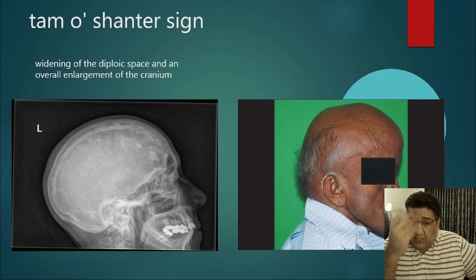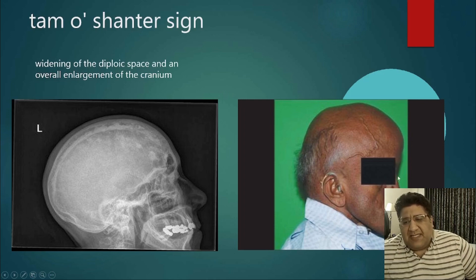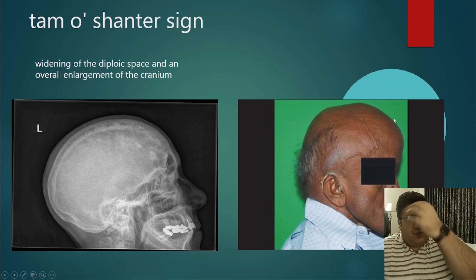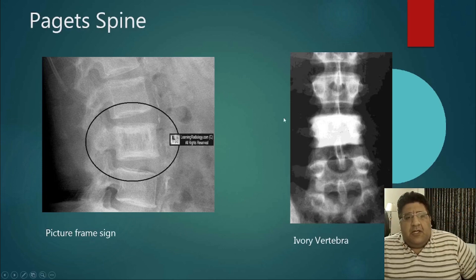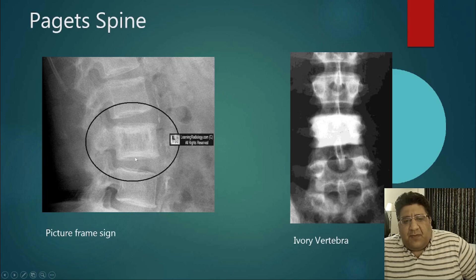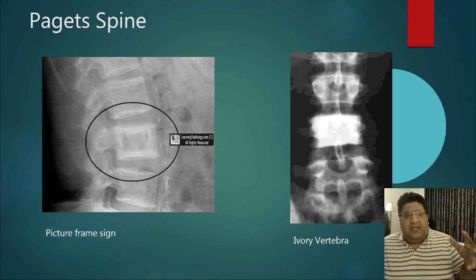The tam o'shanter sign is named after a cartoon character with an excessively protuberant frontal bone combined with a depressed saddle nose. The excessively protuberant frontal bone visible on X-ray is called the tam o'shanter sign. Spinal features in Paget's are of two types: the picture frame vertebra — where all four endplates are thick and dense leaving an empty central frame — and the ivory vertebra, which is a uniformly white dense vertebral body.